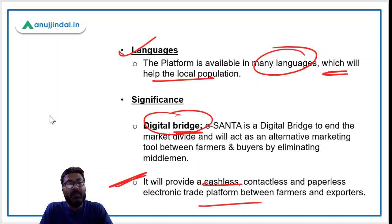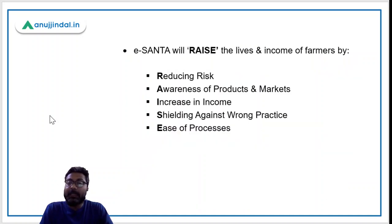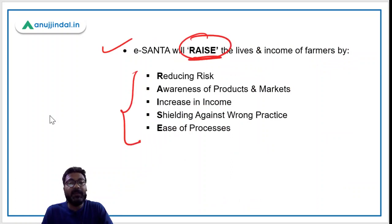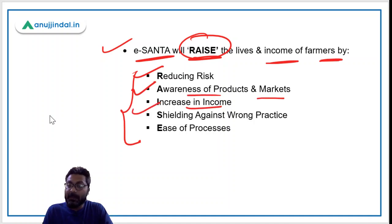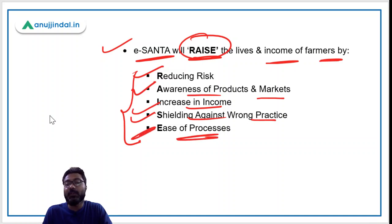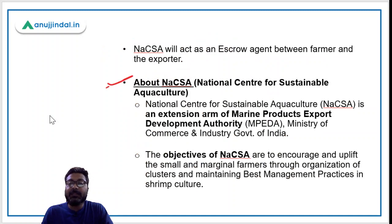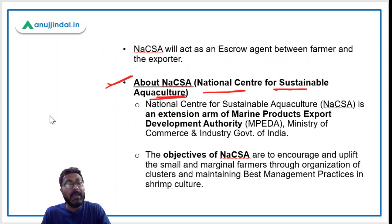The platform will also provide a cashless, contactless, and paperless electronic trade platform between farmers and exporters. There is an acronym RACE which describes how e-SANTA will raise the lives and incomes of farmers: Reducing risk, increasing Awareness of products in market, increase in Income, shielding against wrong practices, and Ease of processes.